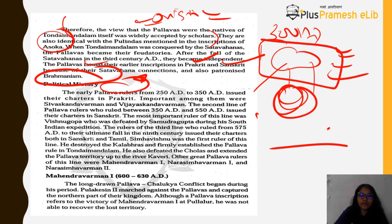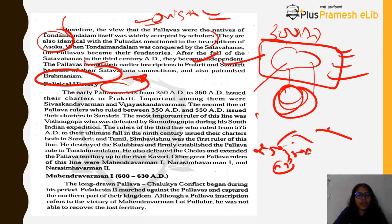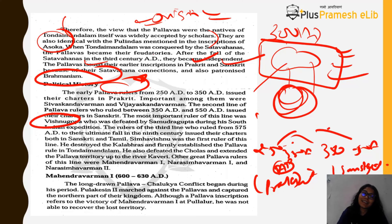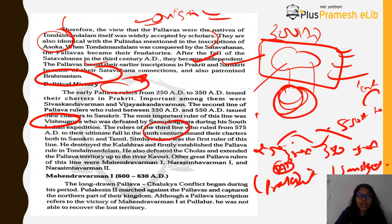The second line of Pallava rulers (350–550 AD) issued charters in Sanskrit. The most important ruler of this line was Vishnu Gopa, who was defeated by Samudragupta of the Gupta Empire during his South Indian expedition — but Samudragupta was so impressed that he gave the empire back. The third line of Pallava rulers (from around 500 AD until their fall in the 9th century) issued charters in both Sanskrit and Tamil — extremely important, as the regional language Tamil now enters the picture.